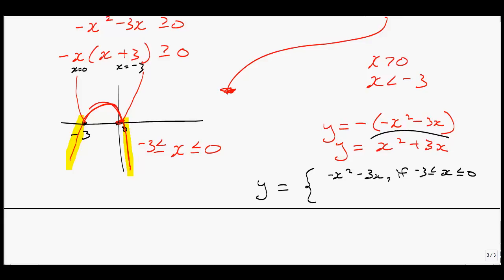The second scenario, we found that this equation, that's this part right there, that's equal to x squared plus 3x. And when does that happen? That happens when x is greater than 0 and when x is less than negative 3.